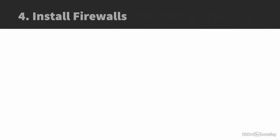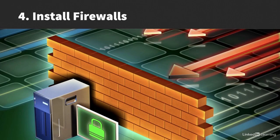Fourth, install firewalls. Firewalls are designed to prevent unauthorized traffic from getting directly to your systems. Many forms of malware attempt to exploit systems that are directly connected to the internet without a firewall. There are also types of malware that, once installed, attempt to communicate with a command and control system outside of the infected network. Hardware and software firewalls can block these malicious traffic flows.